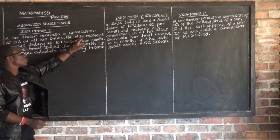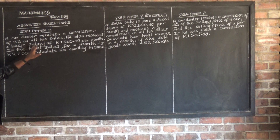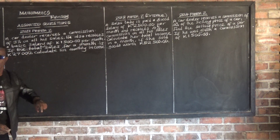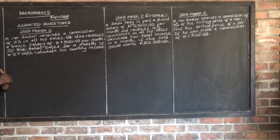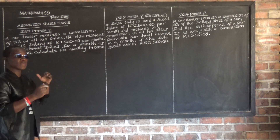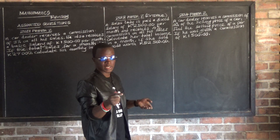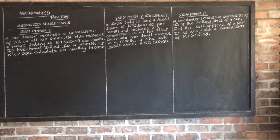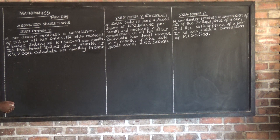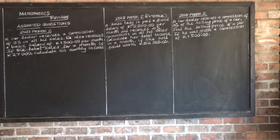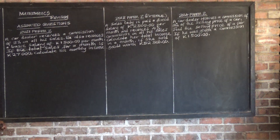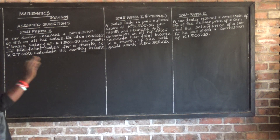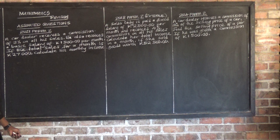He also receives a basic salary of $1,500 per month. That was his fixed salary. Then if the total sales for a month is $27,000, calculate his monthly income — that is, if he sold goods worth $27,000, what was his monthly income?